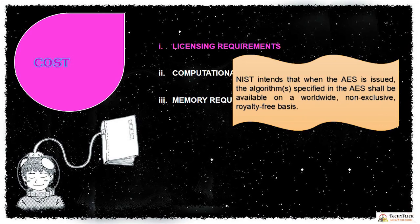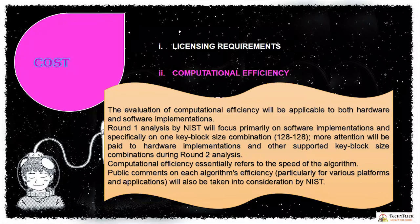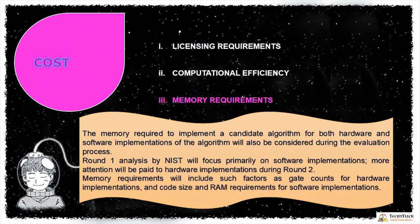Computational efficiency refers to the speed of the algorithm. In round 1, analysis by NIST focused primarily on software implementations. In round 2, it was based on hardware implementations. Memory requirements cover both hardware and software implementations, including gate count for hardware implementations, and code size and RAM requirements for software implementations.